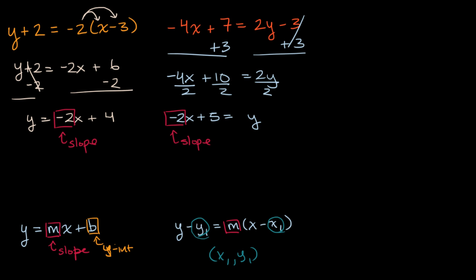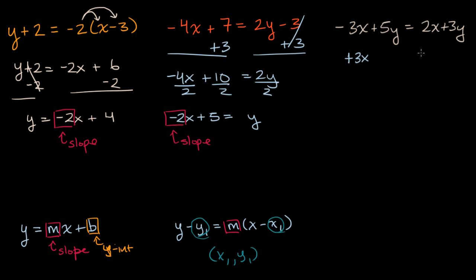Let's do one more example. This is in neither slope-intercept nor point-slope form to begin with, so let's get it to slope-intercept form. Let's get all the y's on the left-hand side and the x's on the right-hand side. Let me get rid of this negative three x by adding three x to both sides, and get rid of the three y by subtracting three y from both sides.